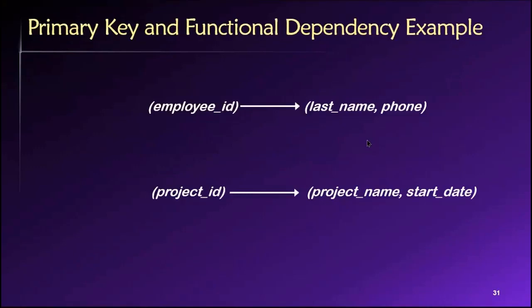So just some examples of these functional dependencies. If I know an employee ID, if this is my primary key, knowing what that is, I should be able to figure out the employee's last name and phone number. Similarly, if project ID is my primary key, I should be able to figure out just with that piece of information alone, the name of the project and the start date for the project.